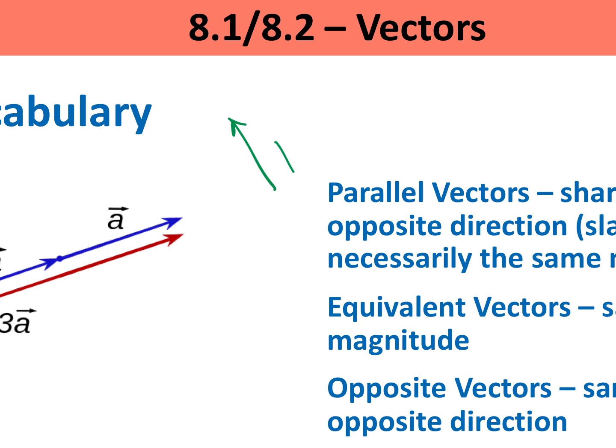Equivalent vectors are vectors that go in the same direction and the same magnitude. Looking at these green ones that I drew, if I wanted these to be equivalent vectors, I would have to make them the same length, same direction, and the same slantedness. Same length and same direction.